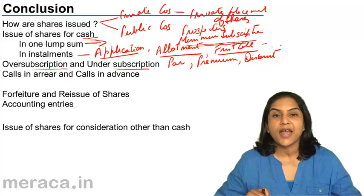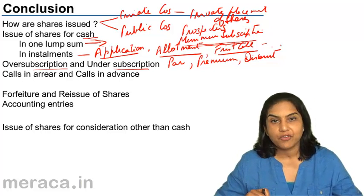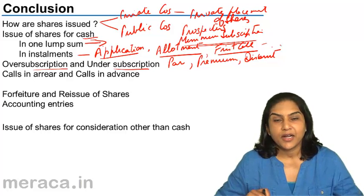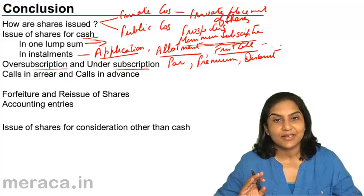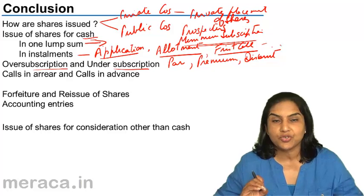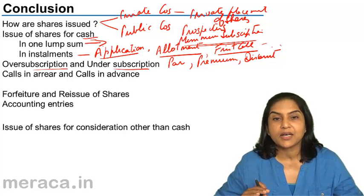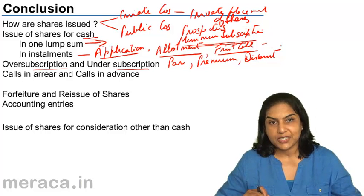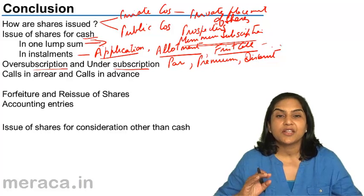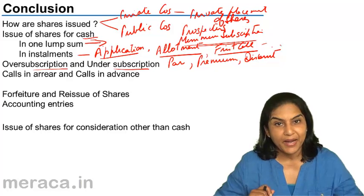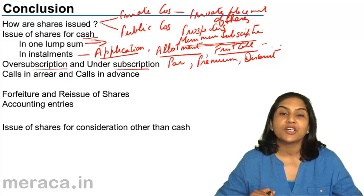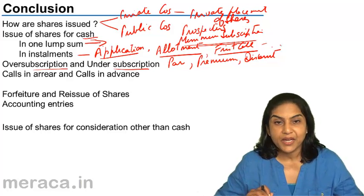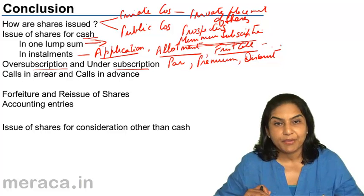Next, we discussed forfeiture and reissue of shares. When a shareholder does not pay the call money due, the company may forfeit or cancel his shares. The company must first send a notice to the shareholder stating that if he does not pay up his calls in arrears within a specified time, his shares will be forfeited. Upon forfeiture, the share stands cancelled and the money the shareholder had previously paid is retained by the company. This is transferred to an account called the Shares Forfeited Account, which is a capital profit and is added to share capital.